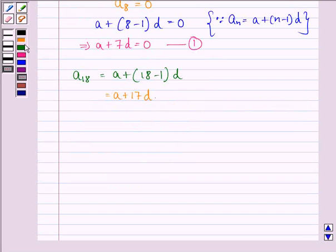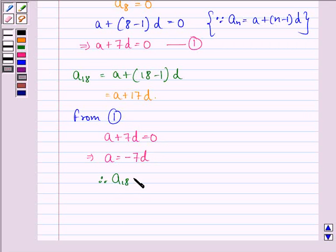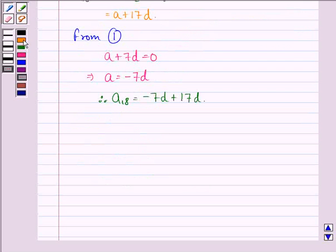From equation 1, we get A + 7D = 0, which implies A = -7D. Therefore A₁₈, the 18th term, equals -7D + 17D = 10D.